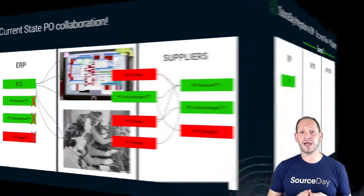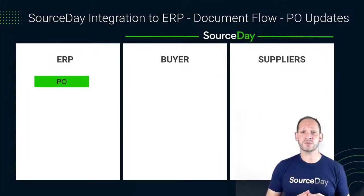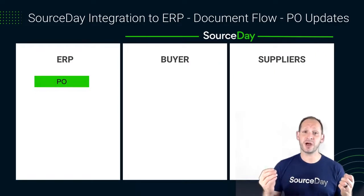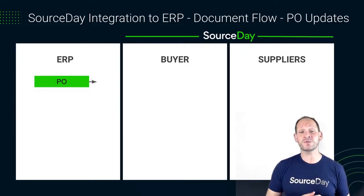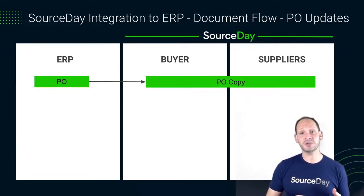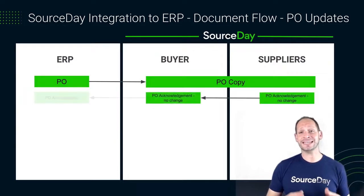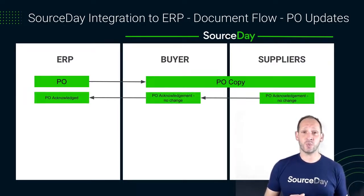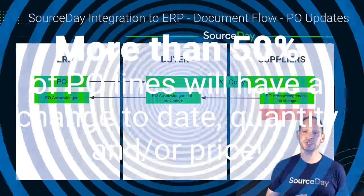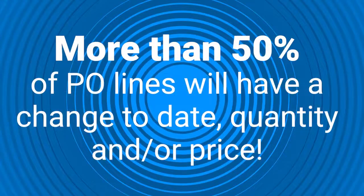SourceDay is going to eliminate that black hole by providing a digital channel from the ERP to the supplier. The supplier is going to be notified that there's a new or updated PO or PO lines that has to be acknowledged. Since SourceDay is a multi-tenant SaaS solution, we're able to gain insights across the platform. One data point we monitor is the frequency that a PO line changes — our data tells us that 50% to 60% of the time, a supplier is going to make a change to that due date, quantity, or price.